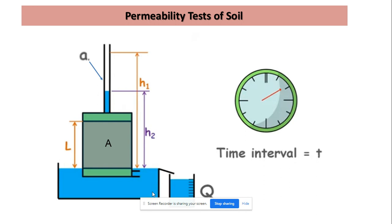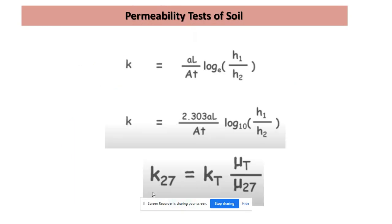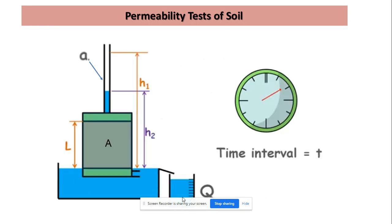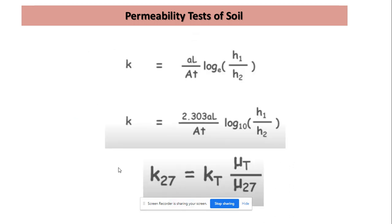Only these two readings, that is heads h1 and h2 and time duration, are required to calculate the permeability of soil sample from falling head test. Other things like the area of mold, area of specimen, length of soil sample, and area of stand pipe are all constant. Only we need to know h1, h2, and time duration. In this way in laboratory.